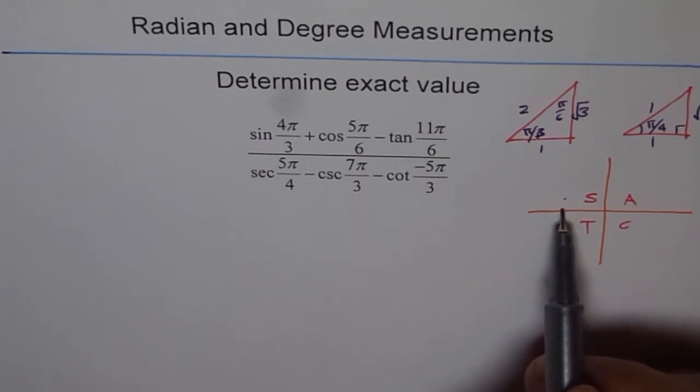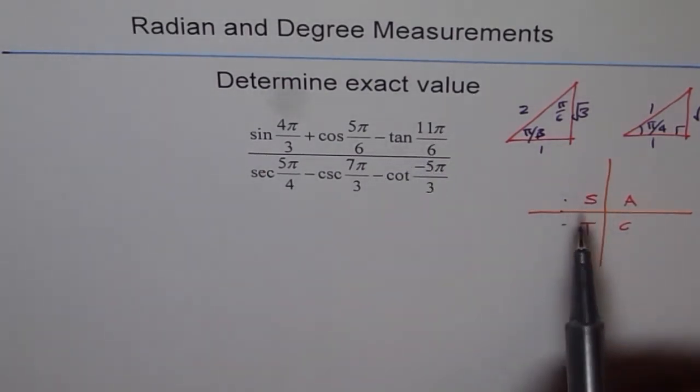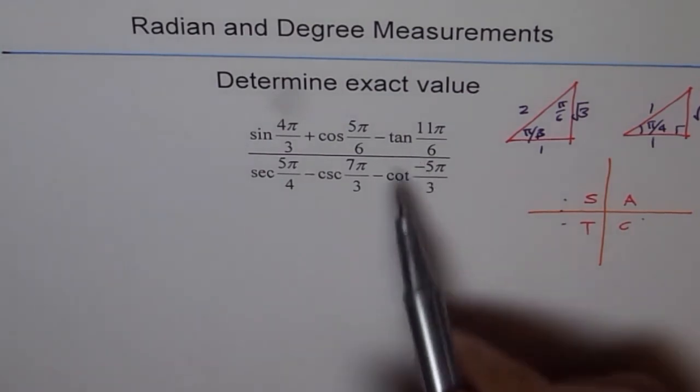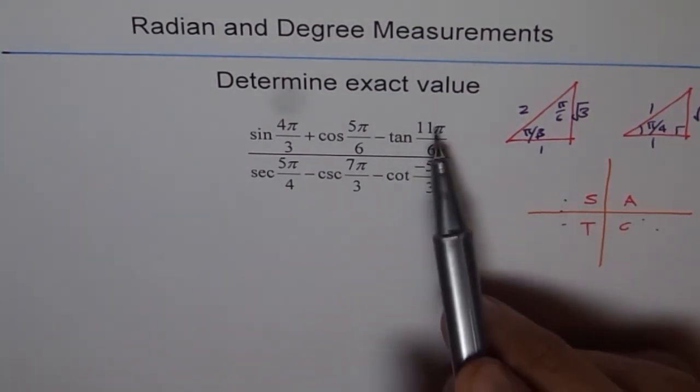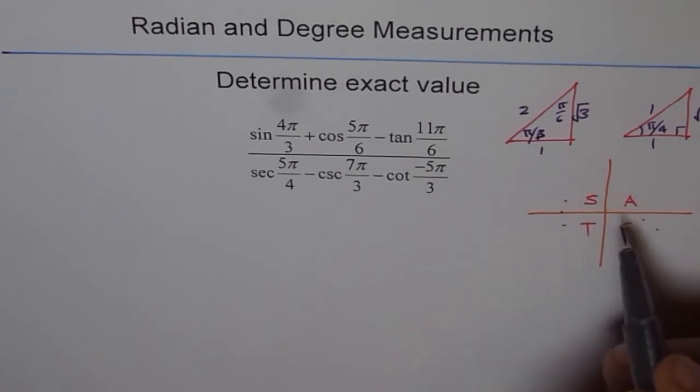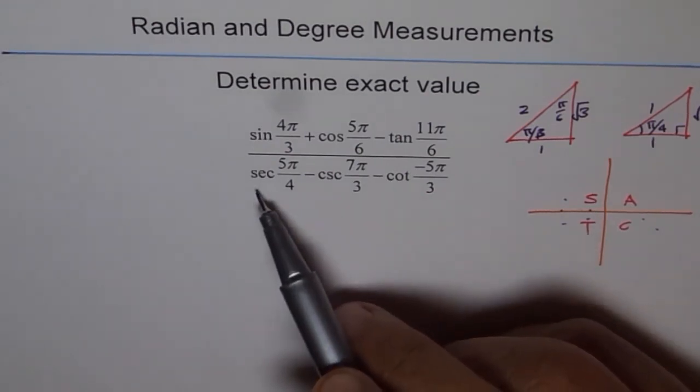Tan 11π/6, there are 6 here, 6 here, 12 in all, 11 means you are here. Tan will be negative, related acute angle π/6. Secant 5π/4, so π/4 and the 5th one comes here, you are in quadrant 3, secant will be negative, acute angle π/4.